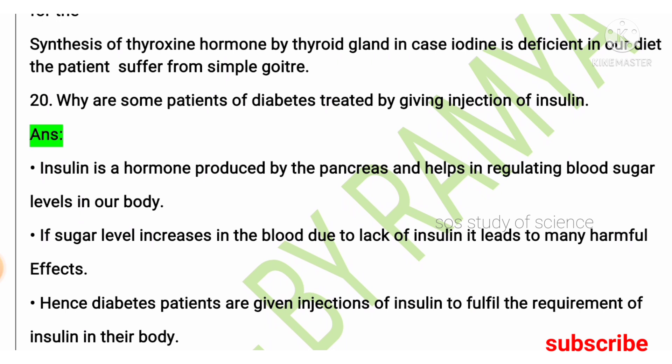Why are some patients of diabetes treated by giving injections of insulin? Insulin is a hormone produced by the pancreas that regulates the blood sugar level. When insulin is not produced by the pancreas in the proper amount, the patient becomes diabetic. So the doctor suggests the diabetic patient to take injections of insulin to balance the blood sugar level in the body.